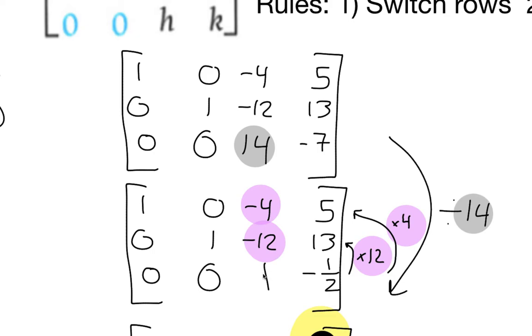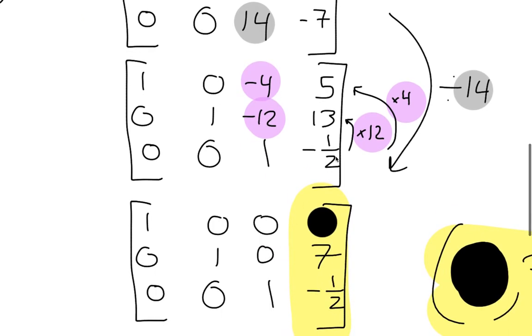Now I'm going to take this bottom row and multiply it by 12, and add it to the middle row. All these zeros do nothing, and 1 times positive 12 is 12, plus negative 12 is 0. Good. Negative 1 half times 12 is negative 6, plus 13 is positive 7. And then I'm going to do the same thing here. I'm going to take this 1, and I see the negative 4. Therefore, I know I need to multiply 1 times positive 4 and add it to this to get the 0. Negative 1 half times positive 4 is negative 2.